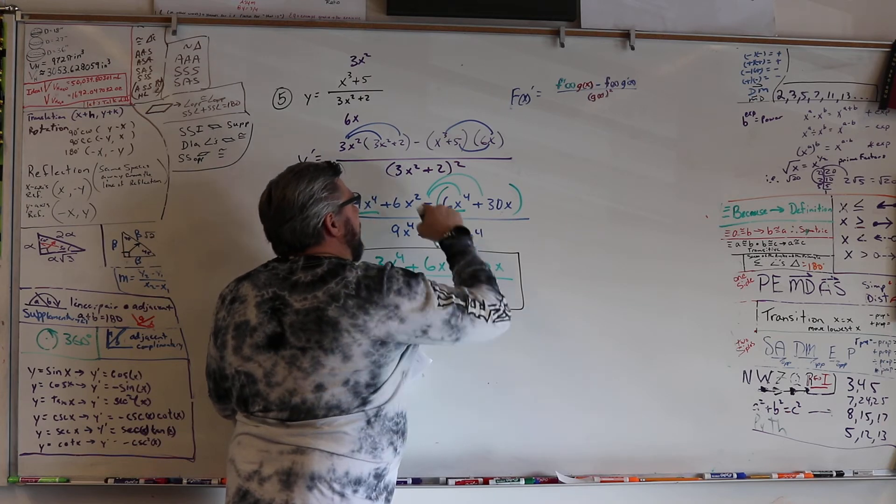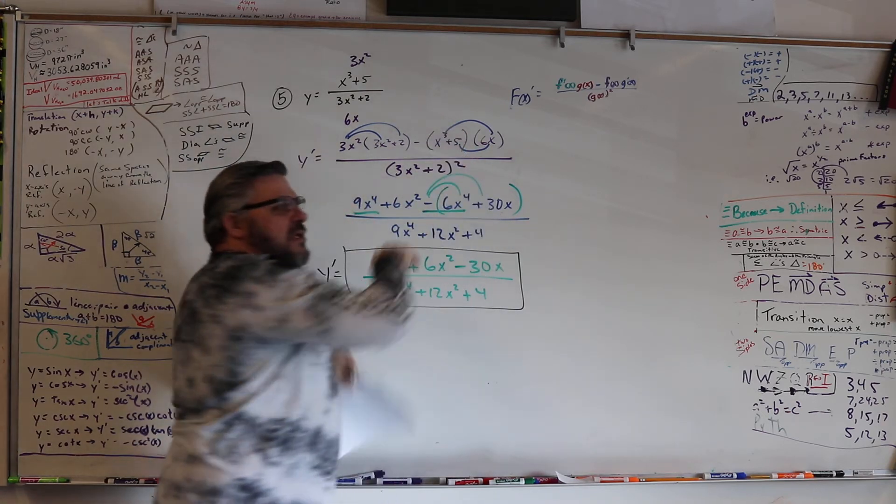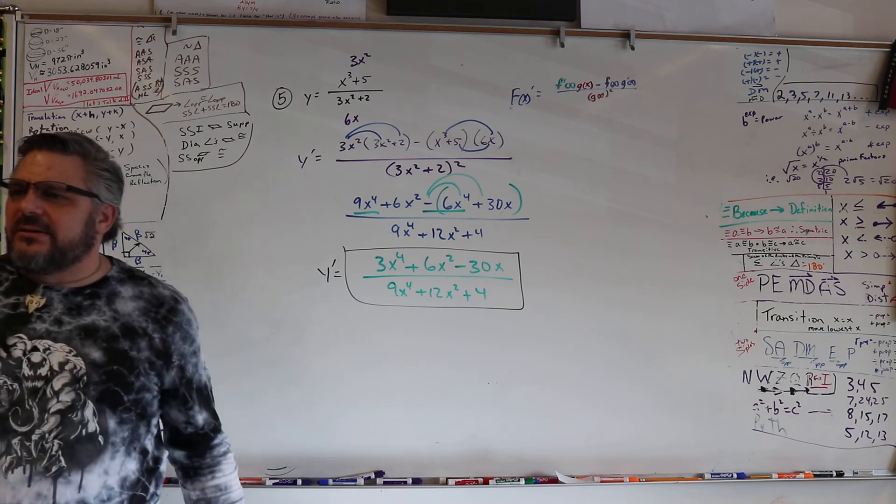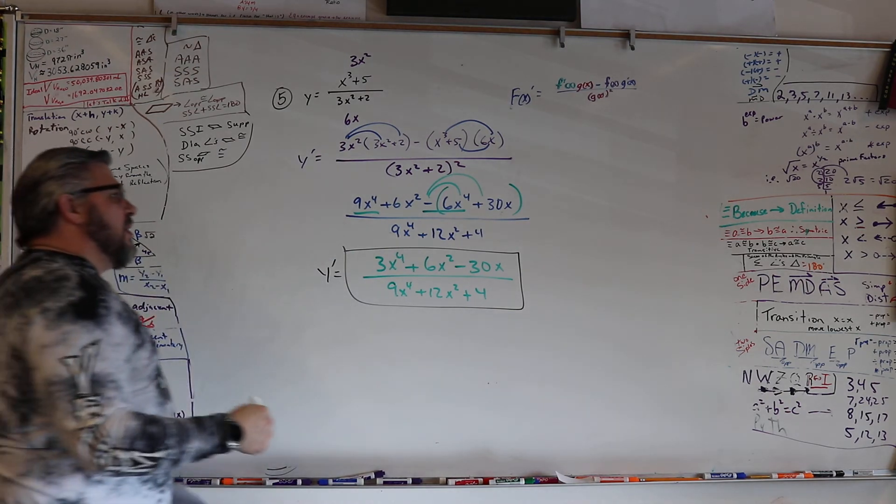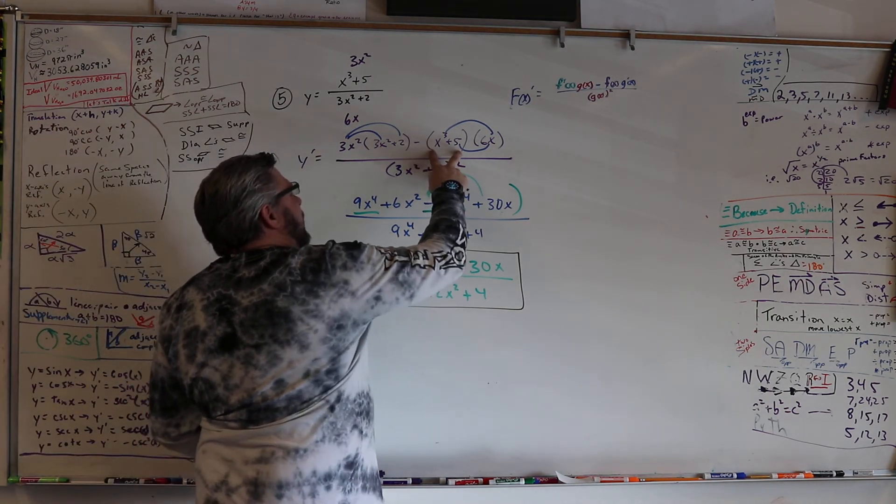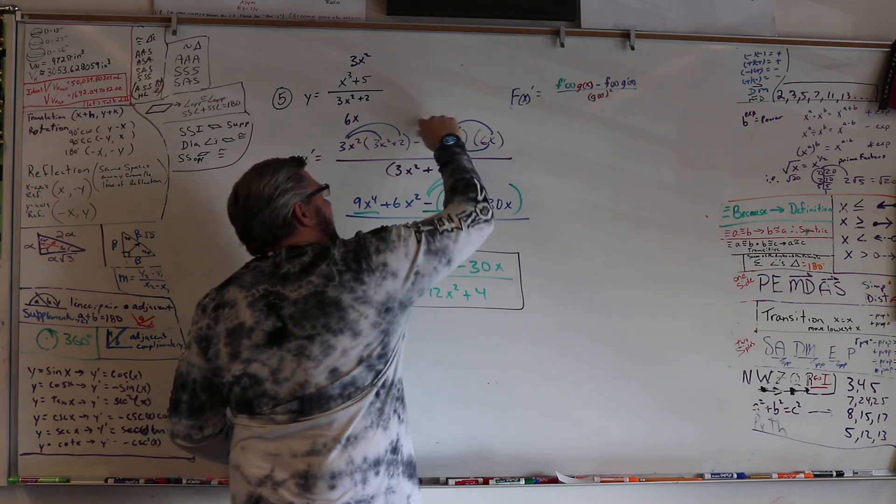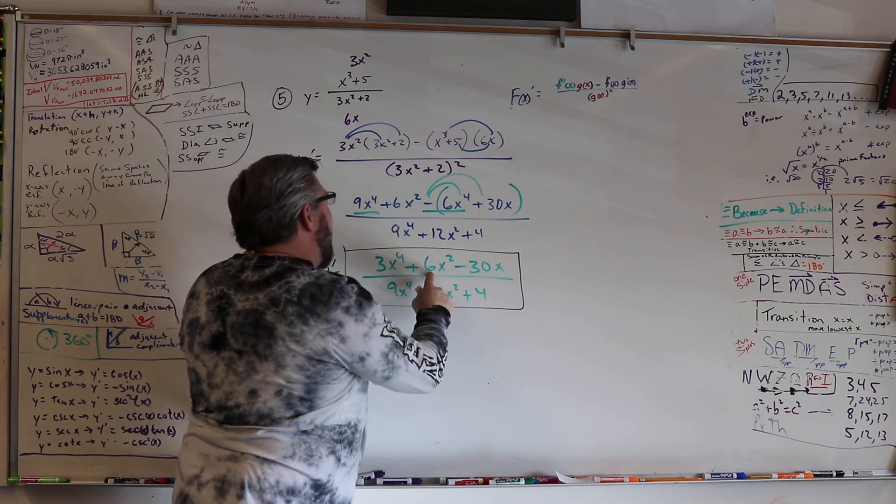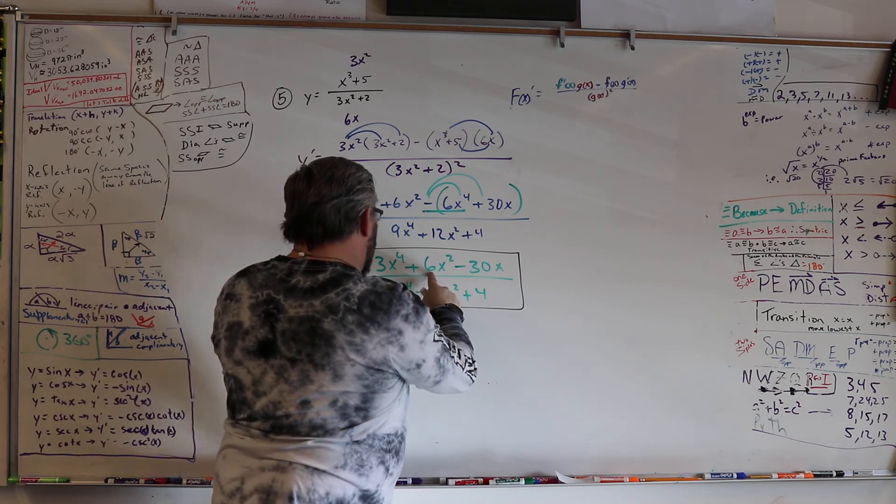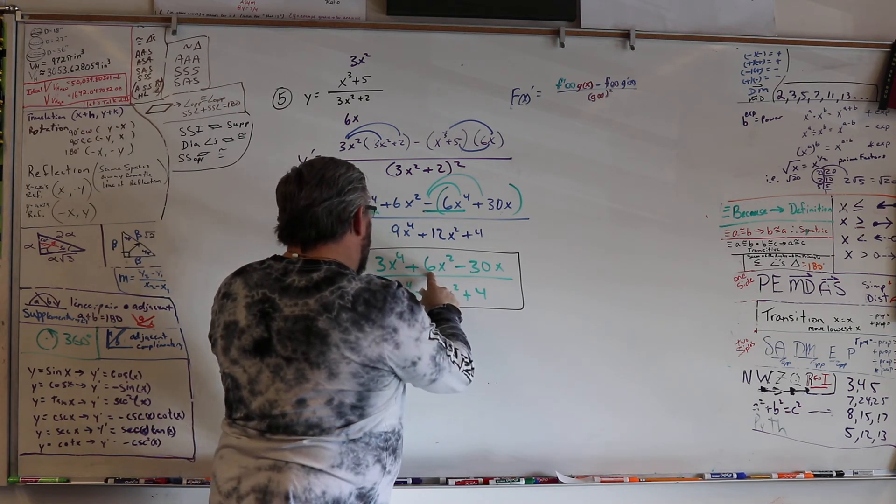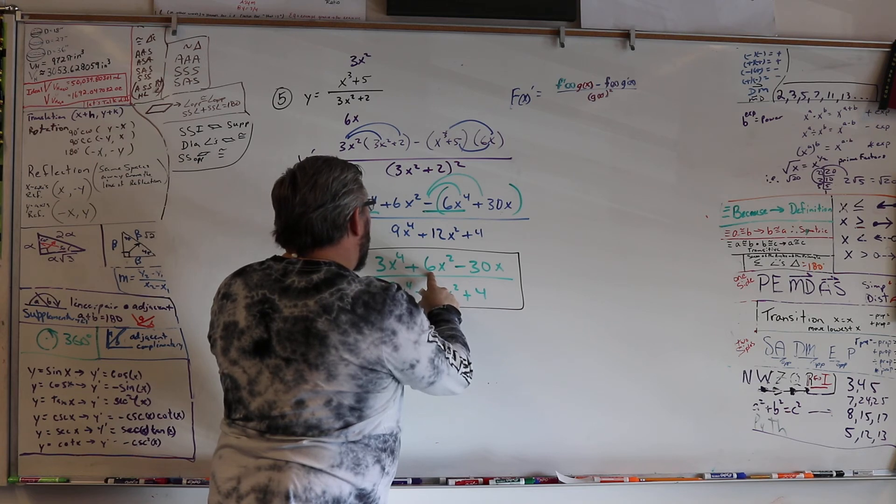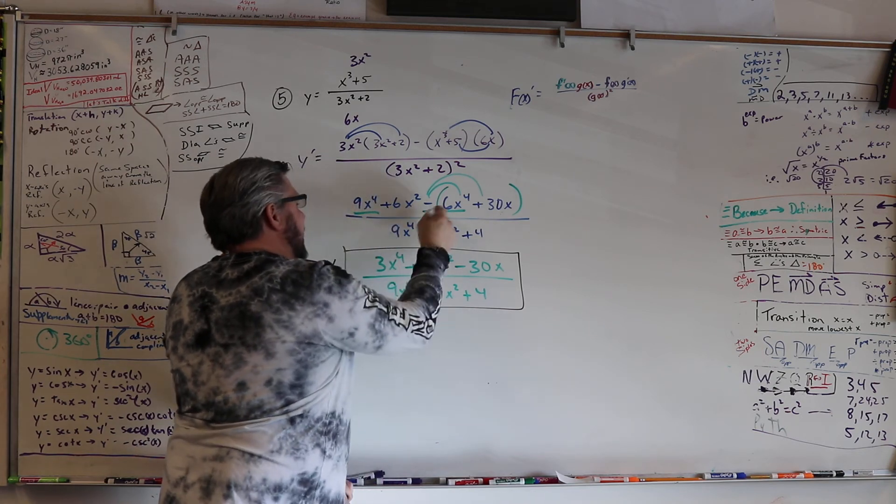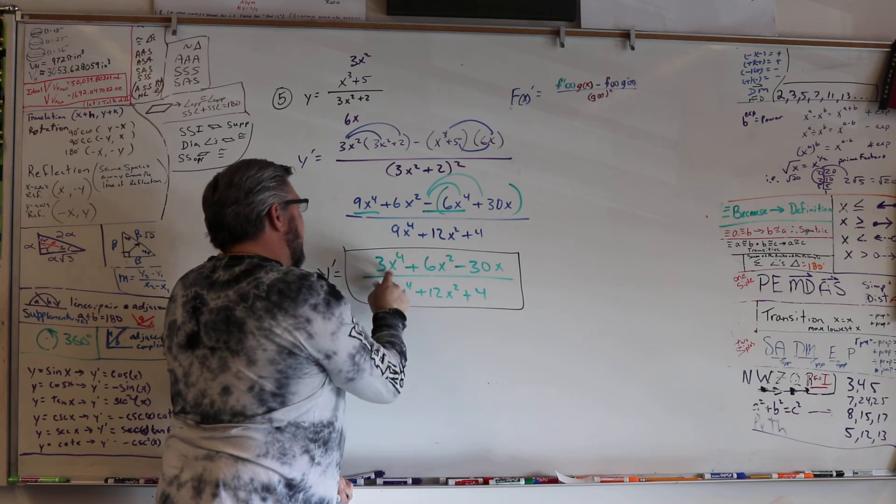So, when we minused it before, it was only a monomial, so it didn't matter. It only went to one piece. But when you have a binomial, you have to remember that that negative goes to everybody in there. And that's why this becomes negative, which we had, right? Yeah, because I took these and I subtracted it from mine. That's why I got 3.